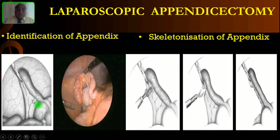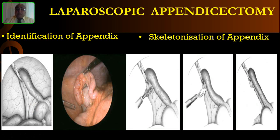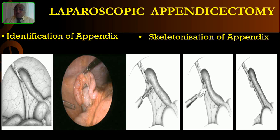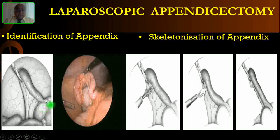After entering the peritoneal cavity, you have to survey the whole peritoneal cavity. Especially in female patients, look for any other pathology — check the ovaries and tubes, look into the pelvis, then turn the laparoscope towards the liver to look at the gallbladder and liver. After that, concentrate on the right iliac fossa. You can identify the appendix by following the taenia coli, which is the hallmark sign for the cecum. The confluence of all three taenia coli is the base of the appendix.